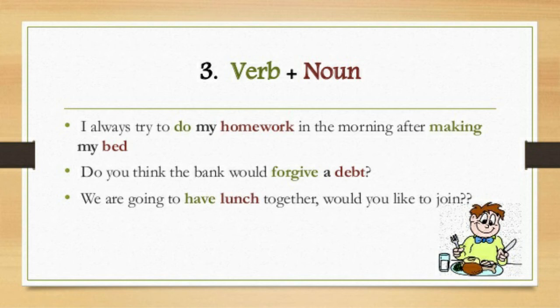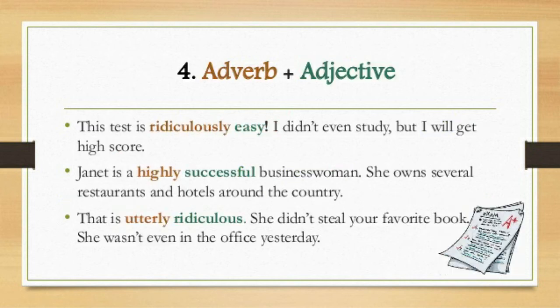To recap verb plus noun collocations: do homework, forgive debt, have lunch. The fourth type of collocations are formed with the help of adverb and adjective. Let's see some examples. 'This test is ridiculously easy.' — 'ridiculously' is an adverb of manner and 'easy' is the adjective. So 'ridiculously easy' is an adverb plus adjective collocation.